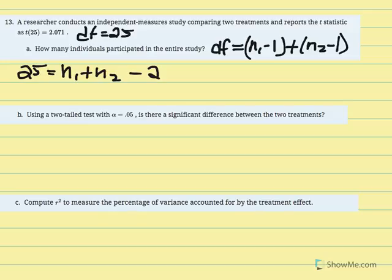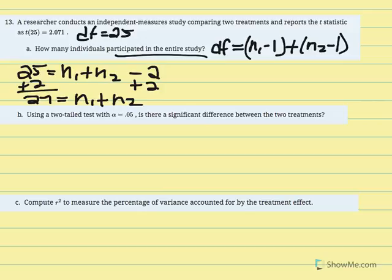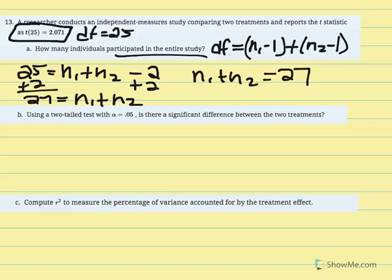Replacing what we know: 25 equals n1 plus n2 minus 2. Adding 2 to both sides gives us 27 equals n1 plus n2. We don't need to know each individual sample size — all we need is the total: n1 plus n2 equals 27 individuals participated in the entire study. Remember: what's in the parentheses of a reported t-statistic indicates the degrees of freedom for the test performed.